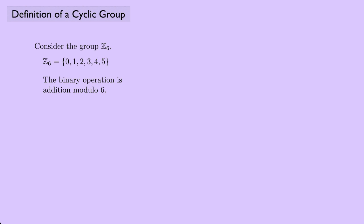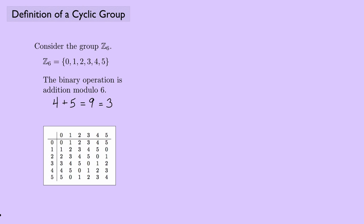Consider the group Z6. Z6 consists of the integers 0, 1, 2, 3, 4, and 5, and the binary operation is addition modulo 6. For example, if we wanted to compute 4 plus 5, normally you would say 4 plus 5 is 9, but 9 mod 6 is the same thing as 3. Here's the group table for Z6, and we can confirm that 4 plus 5 is indeed 3.